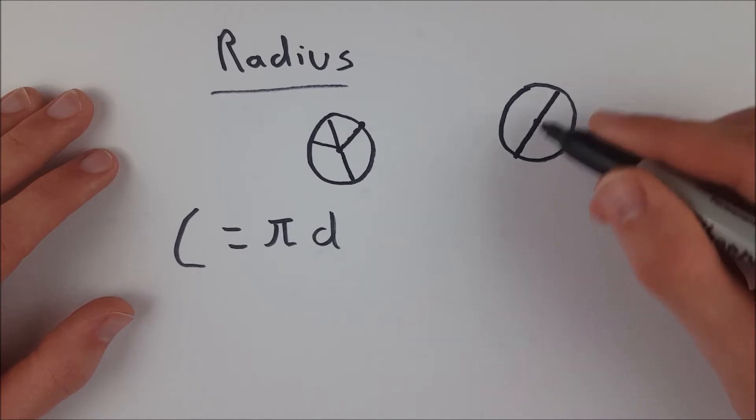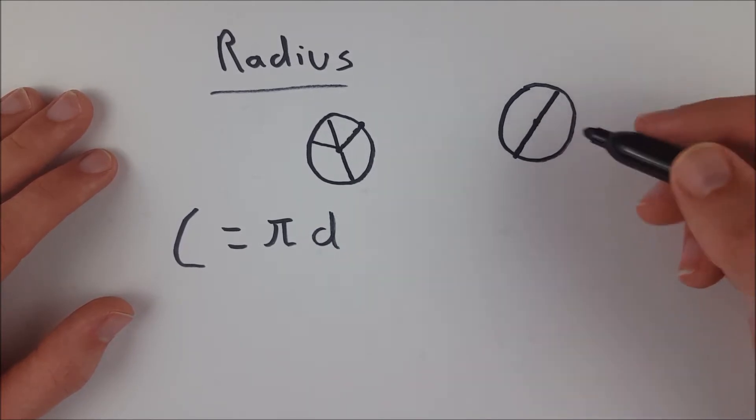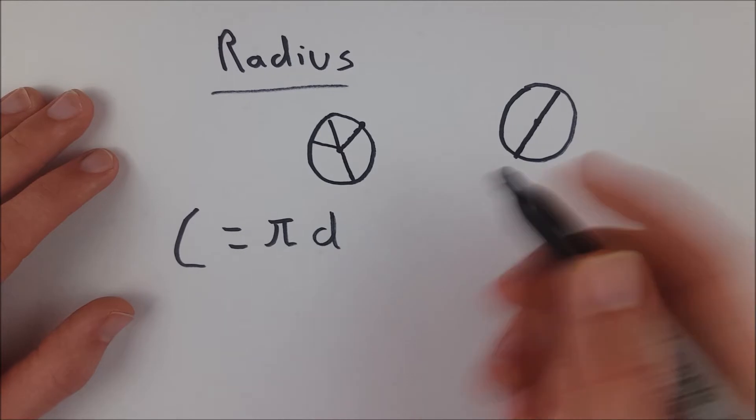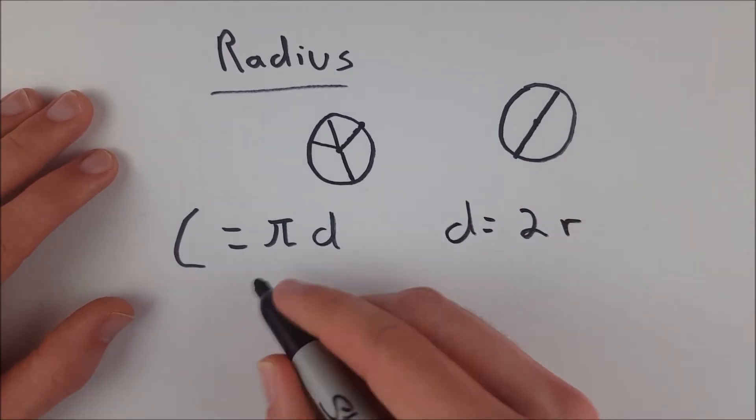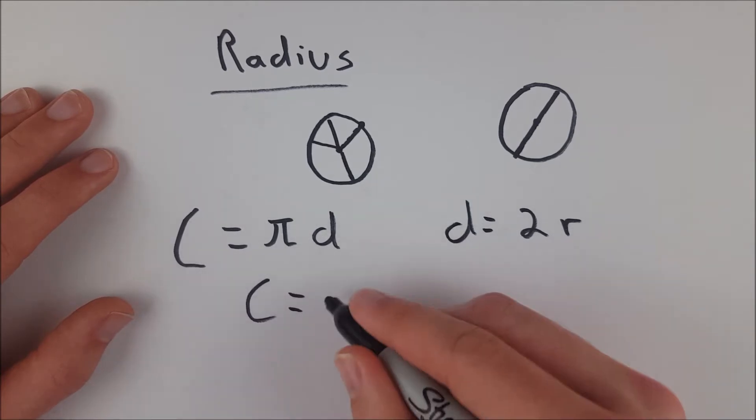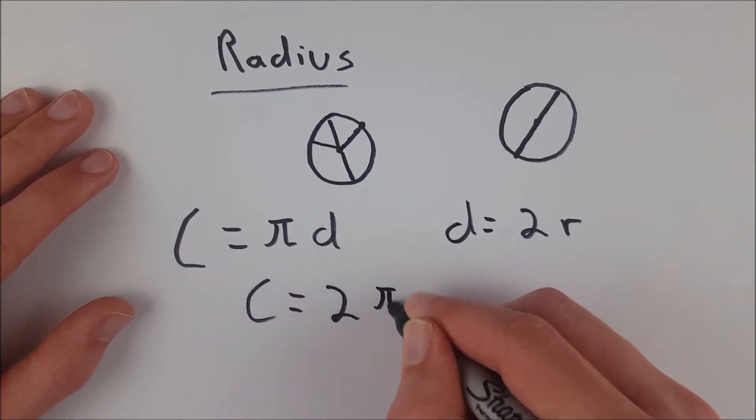And of course, we just show that this diameter is equal to two radii. So we know that d, diameter, is equal to 2r. Therefore, the circumference is equal to 2πr.